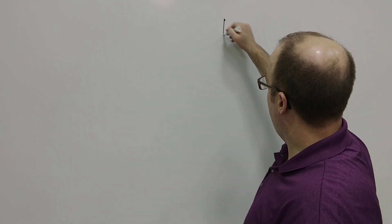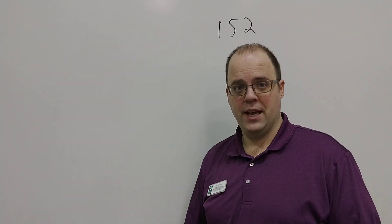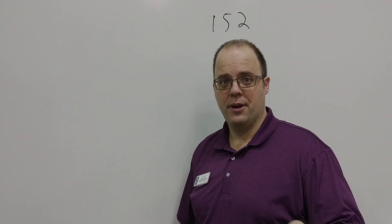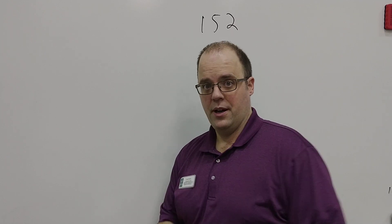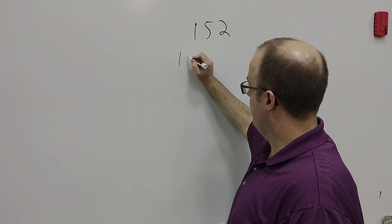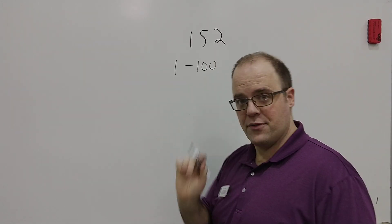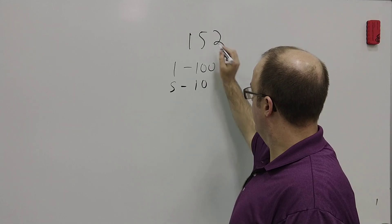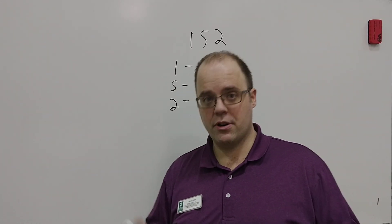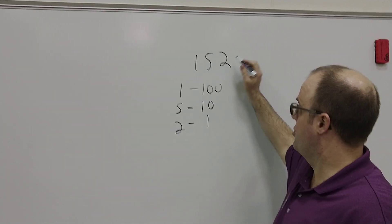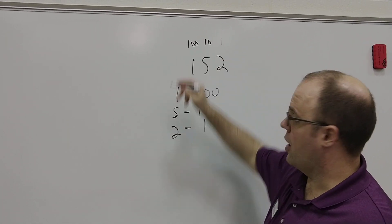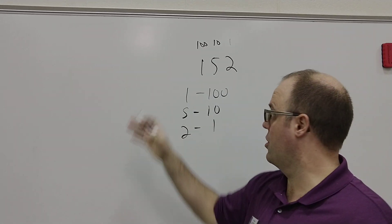Let's start off with something you probably learned in 5th grade or earlier. If I have a number like 152, and you're going to a store to pay $152, how that would work is we would get one $100 bill, five $10s, and two $1s. You think about this every day when you count, because I can break these numbers down into how many 1s, 10s, and 100s there are, and if I had thousands and 10,000s and so on, I can just break this up.